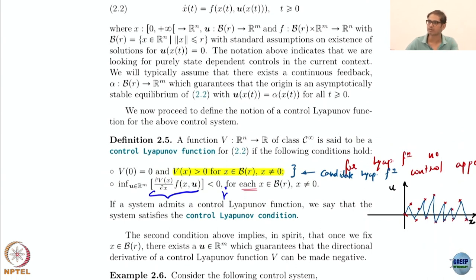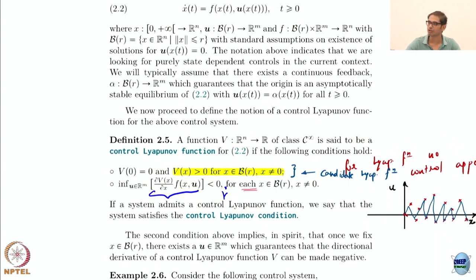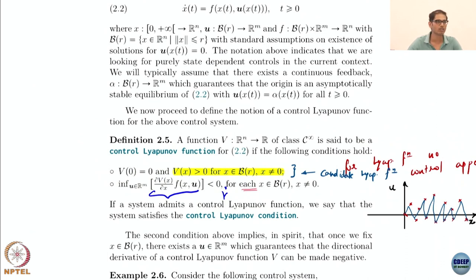You can think of this as an optimization problem — it is almost an unconstrained optimization problem. The only thing is you want the value to come out negative. If you run an optimization and the value turns out to be positive, then V is not a CLF. Such a CLF is very useful in control design.